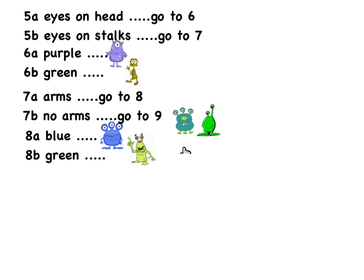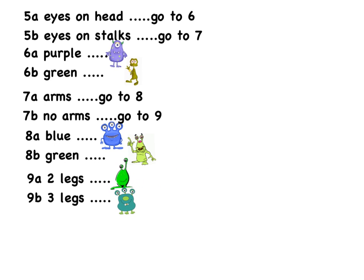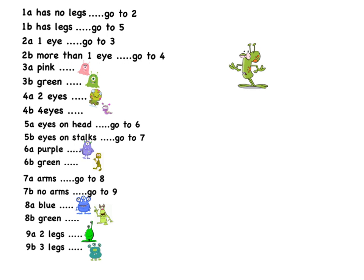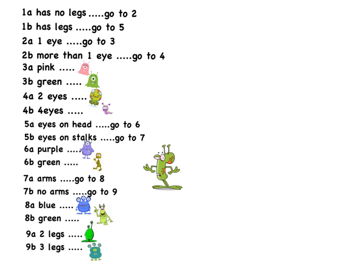Lastly, I can use the number of legs to distinguish between these two. So I now have a dichotomous key that I could use to identify these alien species. My key could then be used by someone else to classify a new alien — I would go through the choices: I have legs, so I jump to number five. My eyes are on my head, so I jump to number six. This one is green, so I would classify it right there.